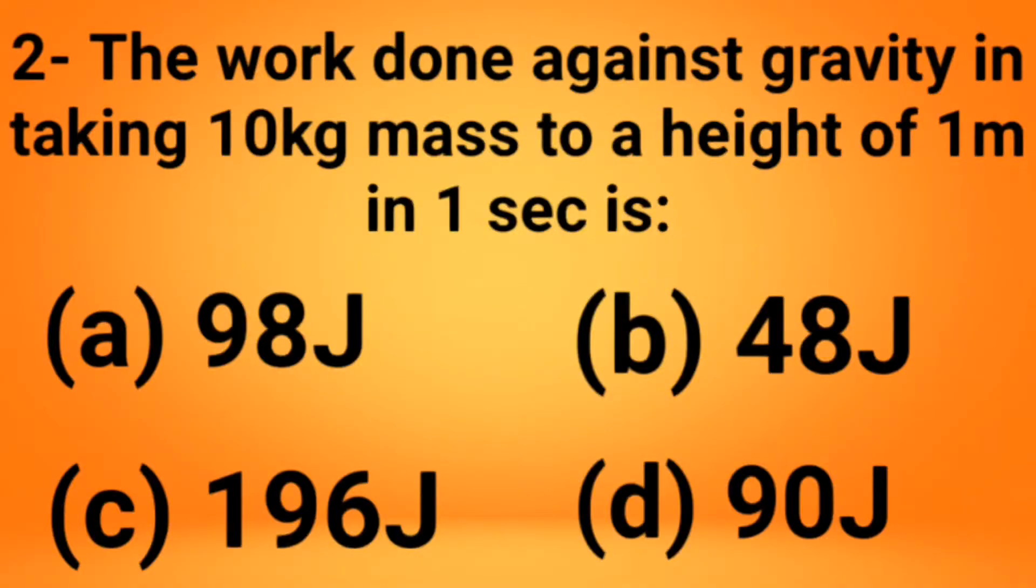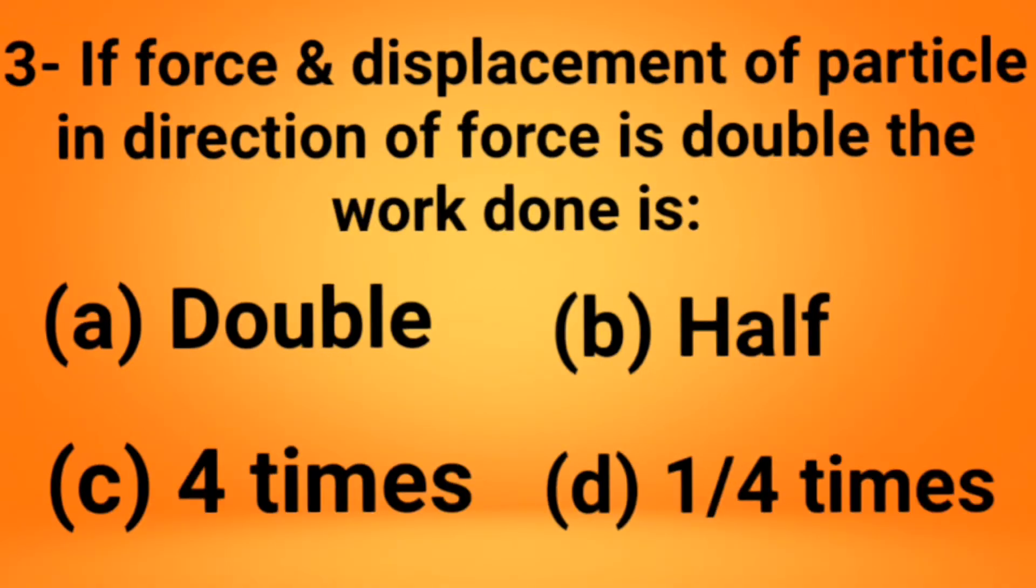Let's move toward the third MCQ. If a force and displacement of a particle in the direction of force is doubled, the work done is: double, half, four times, or one over four times? The force and displacement both are doubled here, so what will be the work done? Let's solve it.